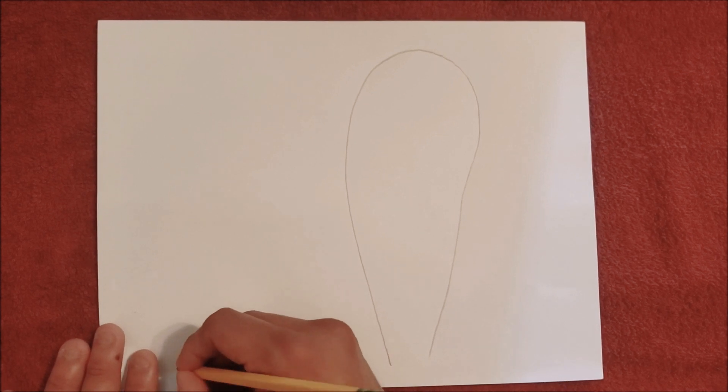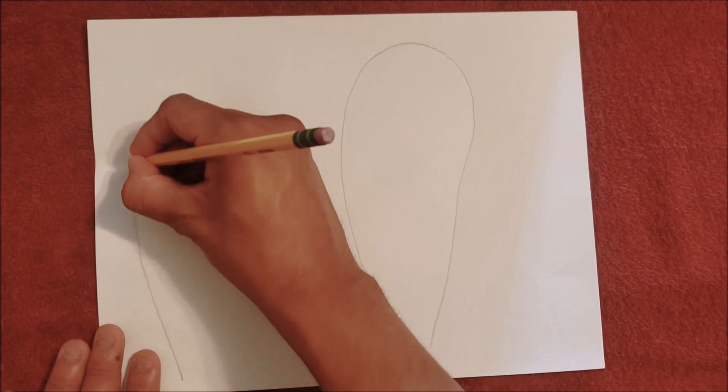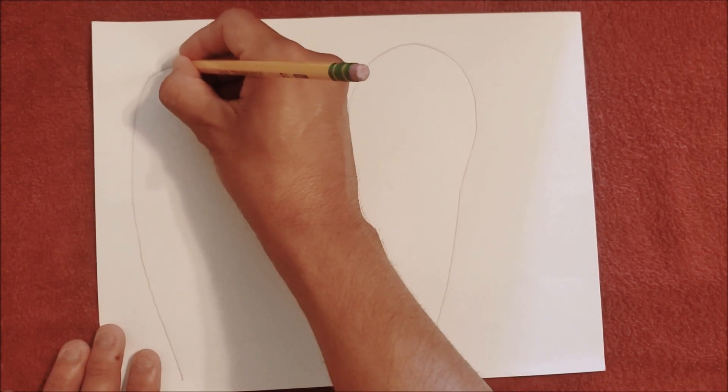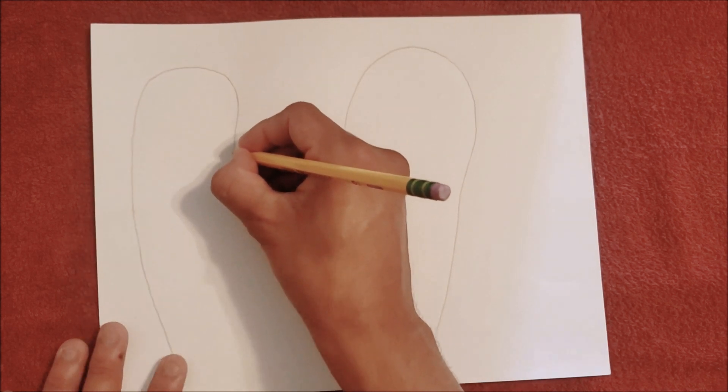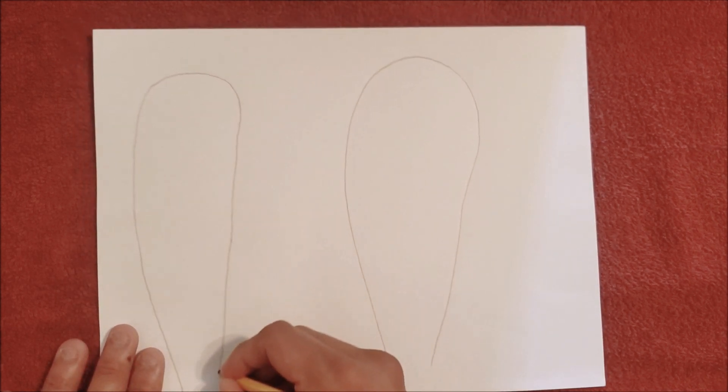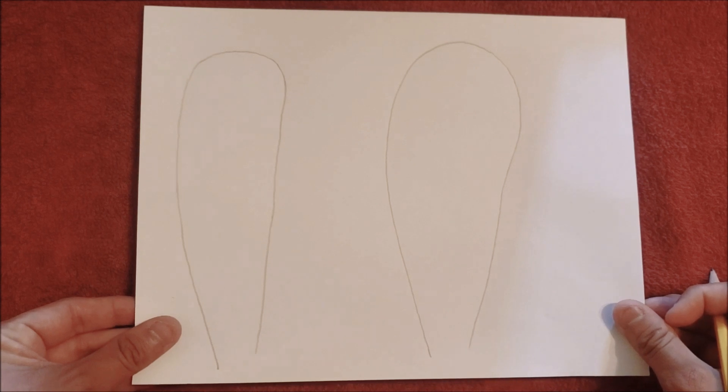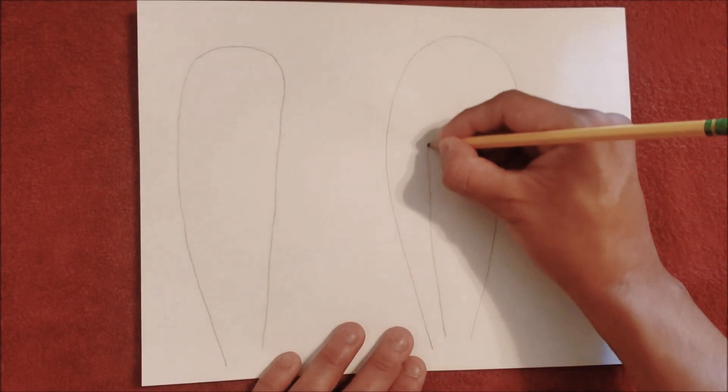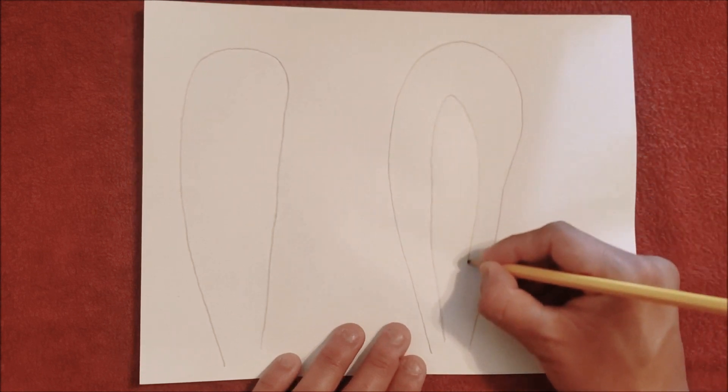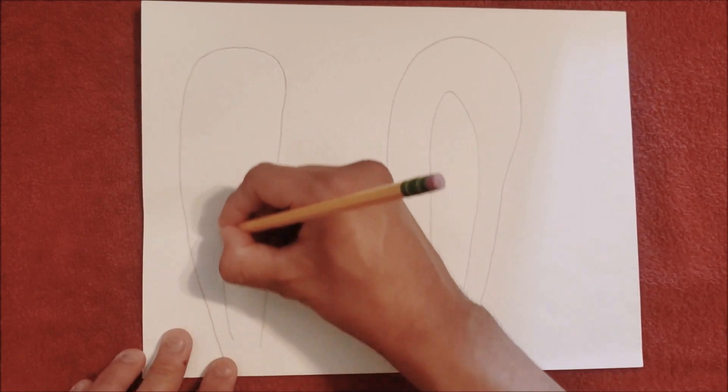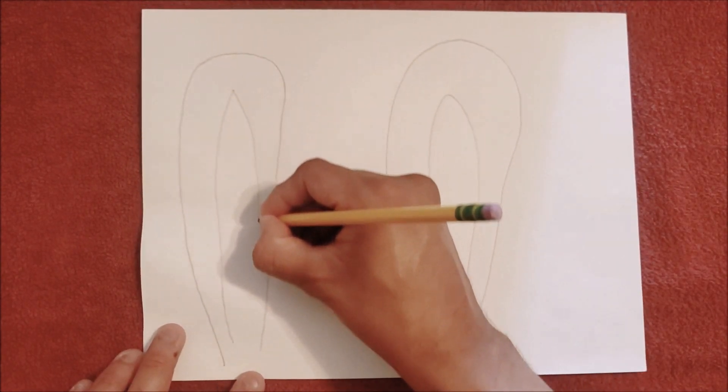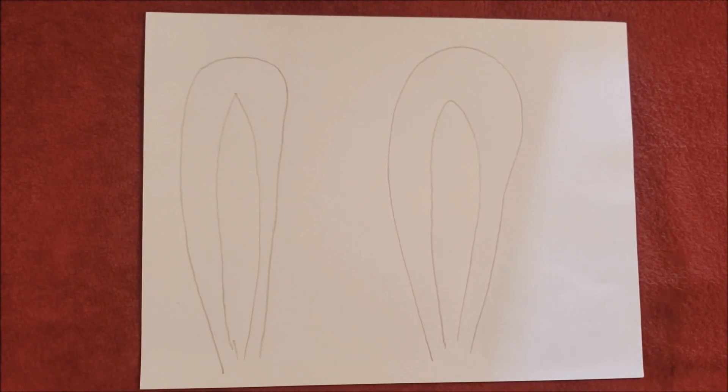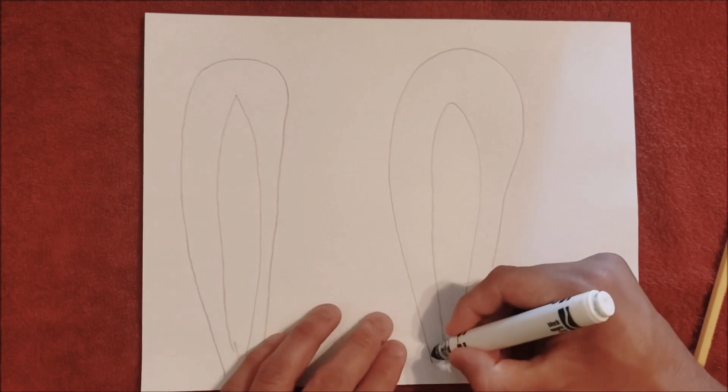Now I'm going to do the same for this side. The ears don't have to match. Mine look way off, but I'm okay with that. So I'm going to draw the inside of the ear. Perfect. All right, here comes the tracing part.